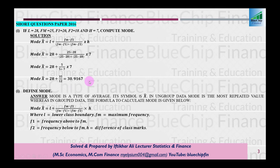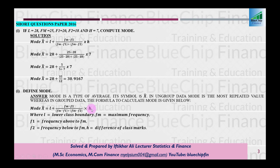Doosra short question: define mode. Mode is a type of average. Iska symbol x-hat hai. Ungrouped data mein formula most repeated value hai, jabke grouped data mein wahi formula use hota hai jo hum ne abhi solve kiya — jisme l lower class boundary hai, fm maximum frequency hai, f1 maximum se ek upar wali frequency hai, f2 maximum se ek neeche wali frequency hai, aur h class ki height ya class marks ka difference hai. Mode suitable average nahi hoti har jagah — maslan forestry department mein mode widely use ki jati hai.